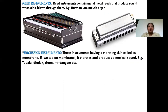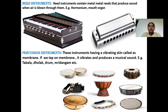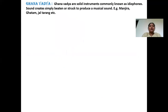The next type is percussion instruments. If you observe the tabla, dholak, and drum — on those instruments a membrane will be fixed up. That membrane is especially made from animal skin. These instruments have a vibrating skin, so they are called percussion instruments. The artist has to tap on the membrane, it vibrates and produces a musical sound.